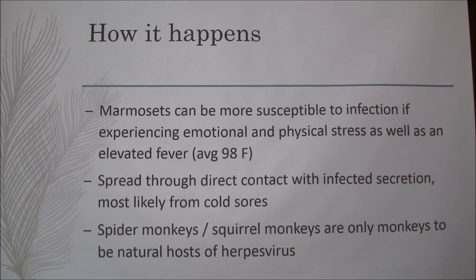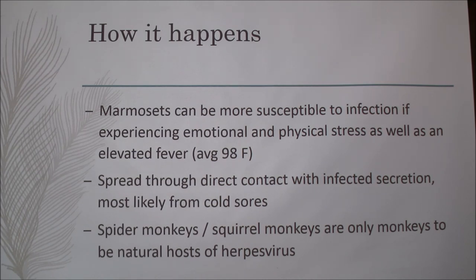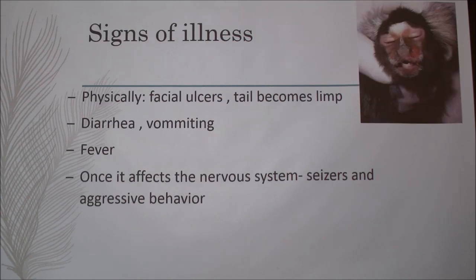Marmosets are very susceptible, especially when they're under stress or if they have a fever. Their normal temperature is around 98 degrees. It is spread through direct contact. Spider monkeys and squirrel monkeys are the only primates that are natural hosts for this, so a marmoset near a squirrel monkey who has it is another way this can spread.